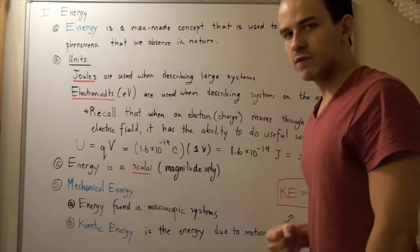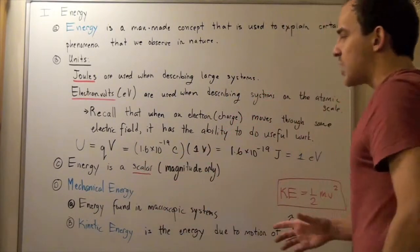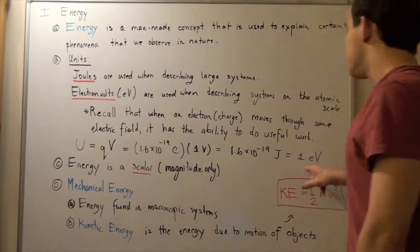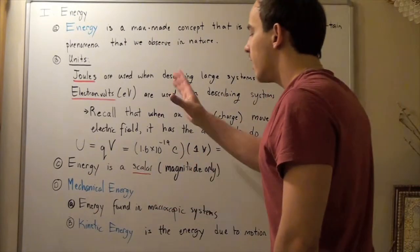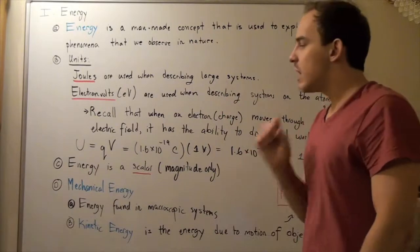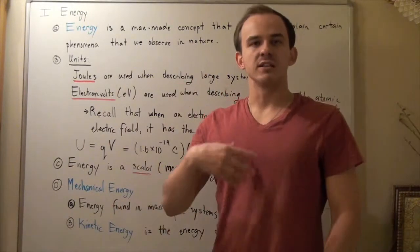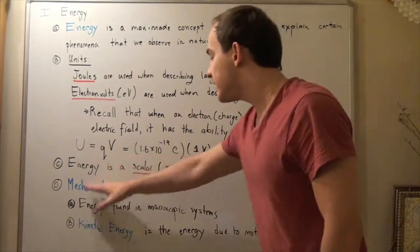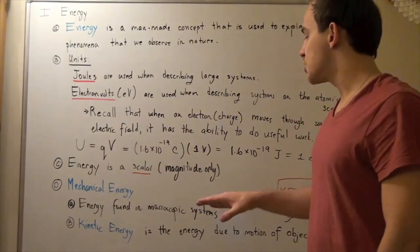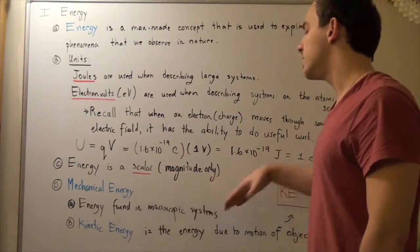So, two electron volts simply means we have two electrons. A thousand electrovolts simply means we have a thousand electrons, and so on. Now, notice, unlike force, unlike displacement, energy is a scalar. That means we only have magnitude and no direction.